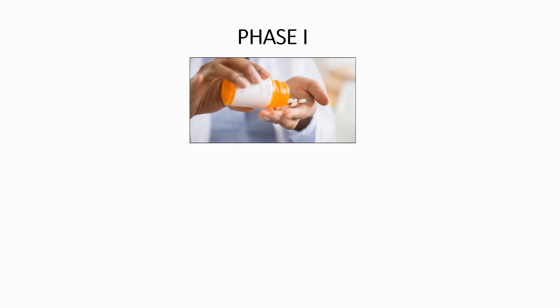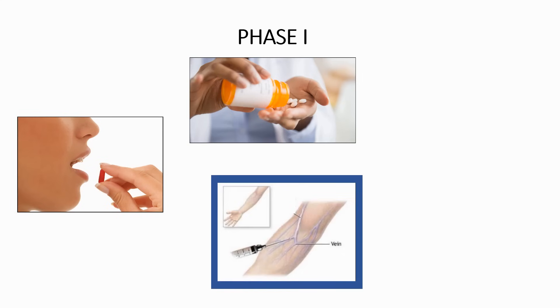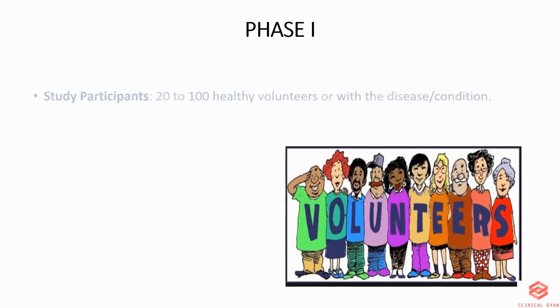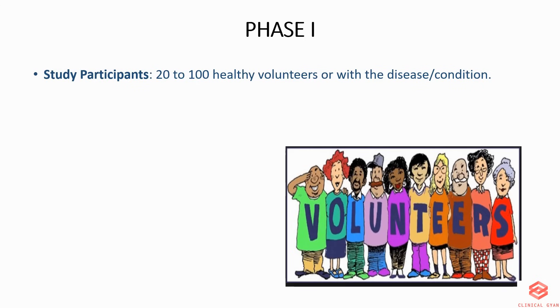Phase 1 aims to figure out the highest dose a human can take without serious side effects. In addition to evaluating safety and ideal dosage, researchers also look for the best way to administer the drug, such as orally, intravenously, or topically.